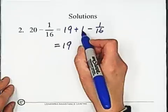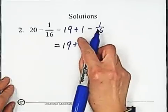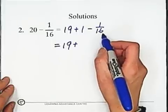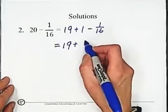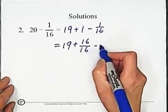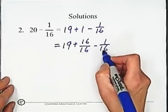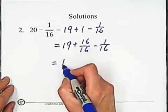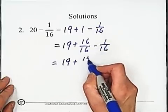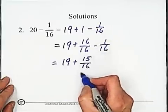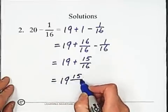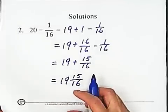Which is 16 so we write 16 over 16 minus 1 over 16. Then we have 19 carry on plus 16 minus 1 equals 15 over 16, so 19 and 15 over 16.